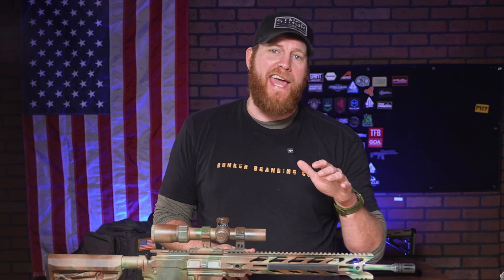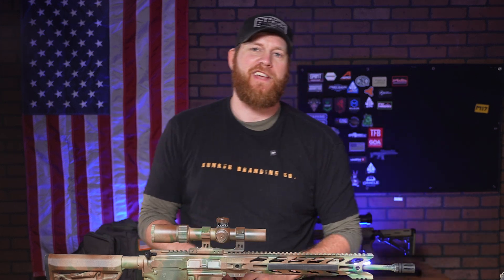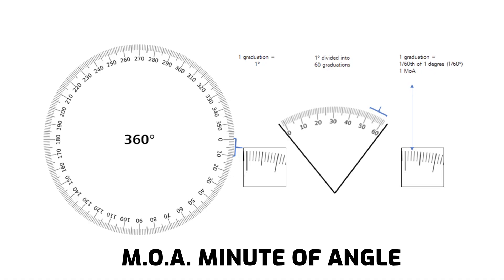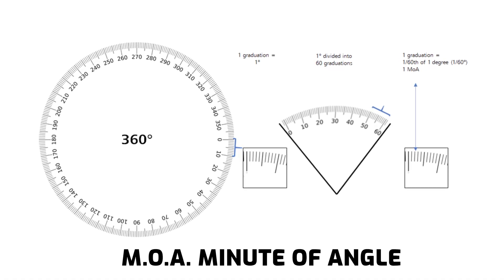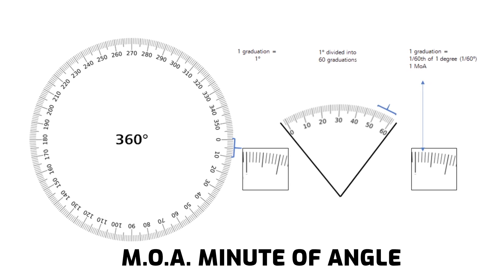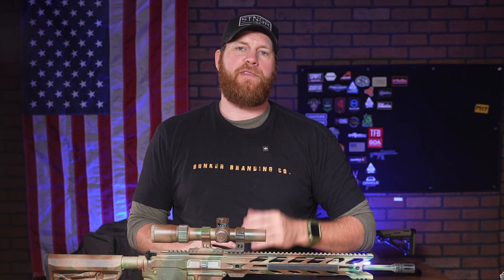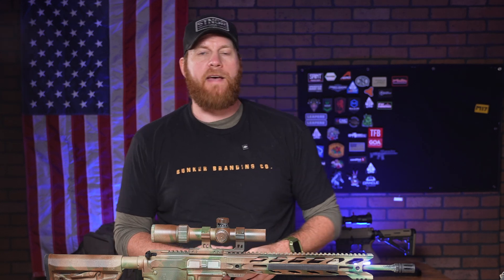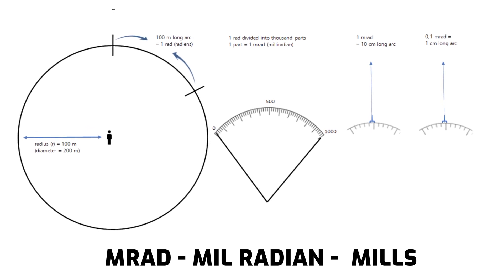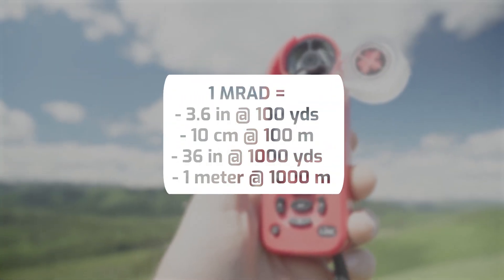MOA and MRAD are angular measurements — not inches or centimeters. Think of them as slices of a circle around you. MOA, or Minute of Angle, is 1/60th of a degree. There are 21,600 MOA in a full circle. At 100 yards, 1 MOA translates to roughly 1 inch, or 1.047 inches to be exact. MRAD, Milliradian or simply Mils, is 1/1,000th of a radian. There are about 17.5 MRADs to make up 1 degree.